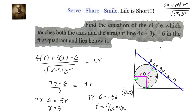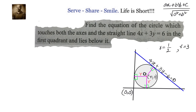So we got two options for the circle's equation: one circle with radius 1 by 2 and centre 1 by 2 comma 1 by 2, and another with radius 3 and centre 3 comma 3. The extra condition we have to take care of is that the circle should be in the first quadrant and lie below the line 4x plus 3y minus 6 equals to 0.